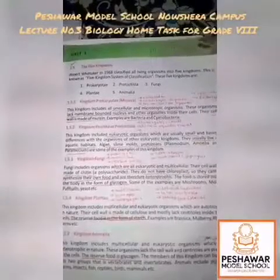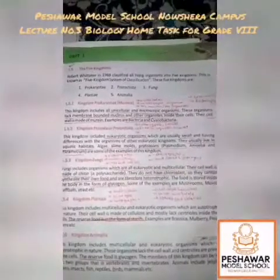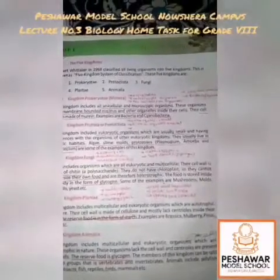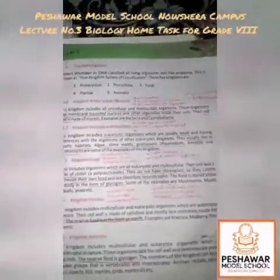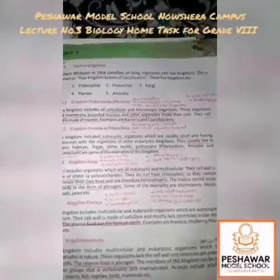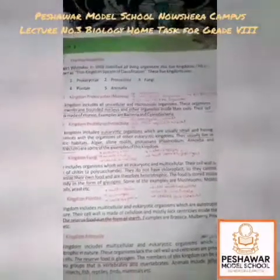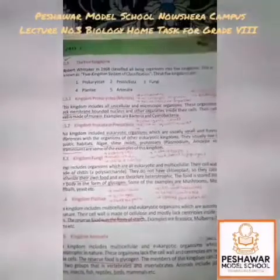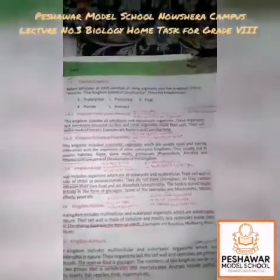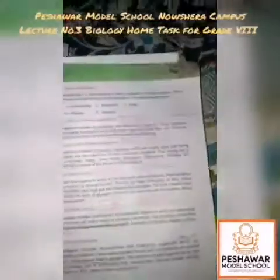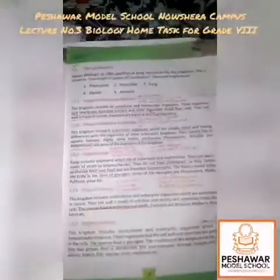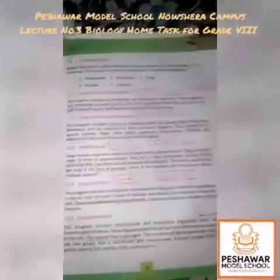Robert Whittaker in 1968 classified all living organisms into Five Kingdoms. Before Robert Whittaker, there were many scientists who classified organisms into Two Kingdoms — Plantae and Animalia. All organisms were classified into Two Kingdoms, which was known as the Two Kingdom Classification. But Robert Whittaker gave the Five Kingdom Classification.